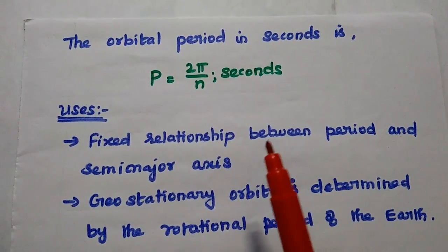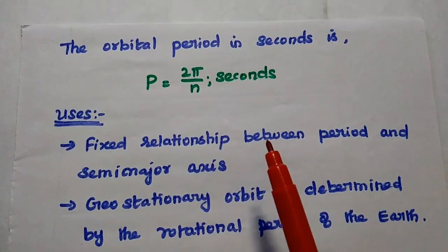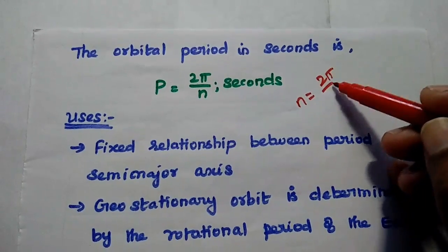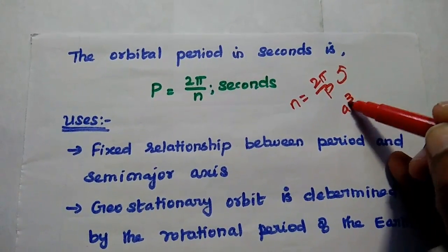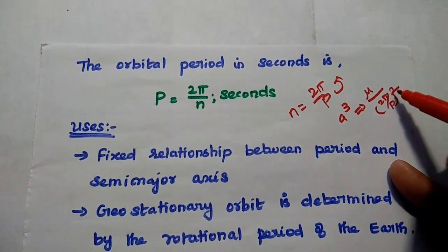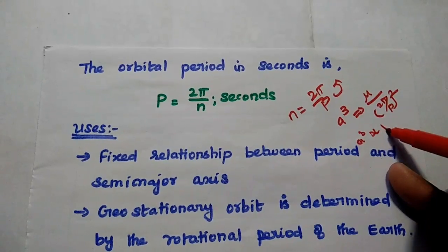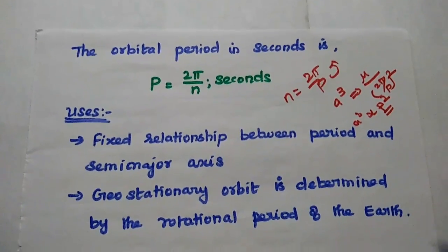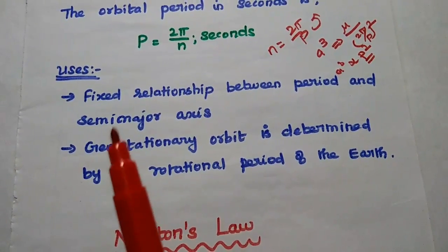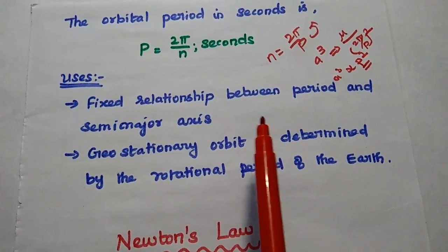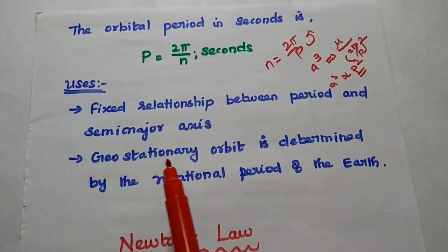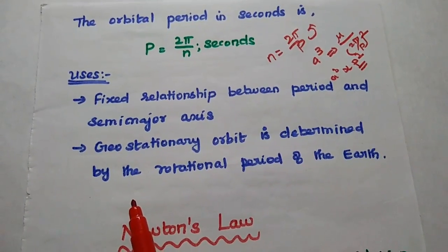The orbital period can be represented as P equals 2 pi divided by N. From this we get N equals 2 pi divided by P. Substituting this value in the third law: A cubed equals mu divided by (2 pi divided by P) squared. Then we get the relation: A cubed is directly proportional to the square of the orbital period. The major advantages of this third law are that it provides a fixed relationship between the period and the semi-major axis, and we can easily determine the geostationary orbit by using the rotational period of the Earth.